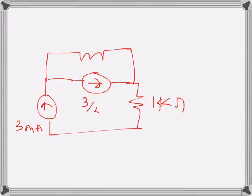This one is 3 over 2 V0, and this is the parallel combination of 4 and 2 kilo ohms, which is 8 over 6 kilo ohms.